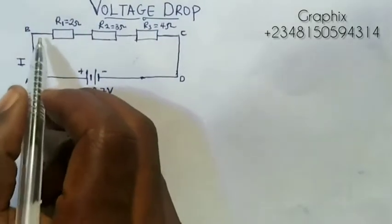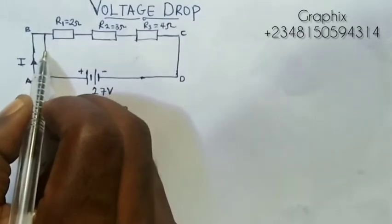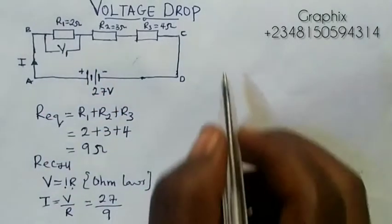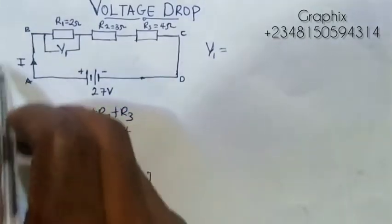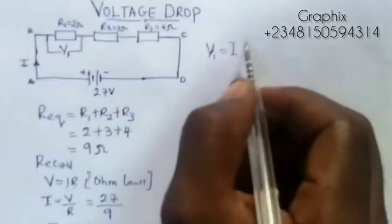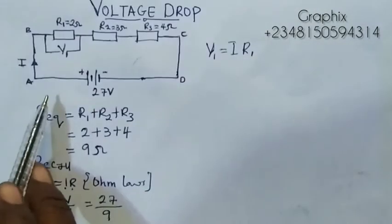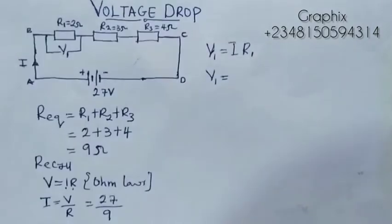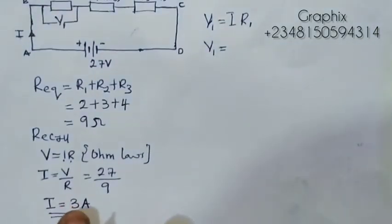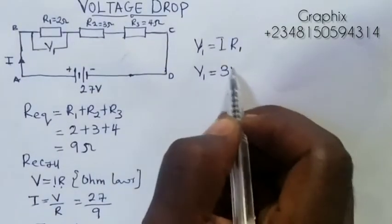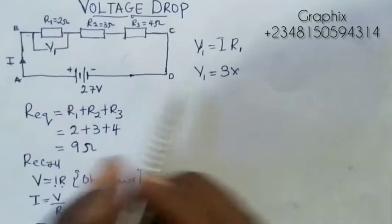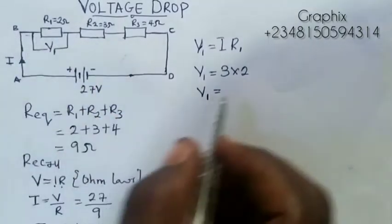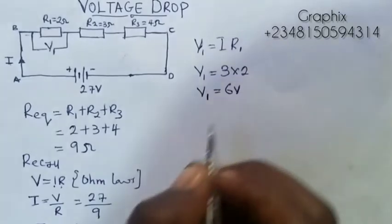So when current I flows through resistor 1, there will be a voltage drop across R1. We say that V1 equals the I flowing through times R1. From here, I can easily say that my V1 will be I, which is 3 amperes, times R1, which is 2. So our V1, the voltage drop across R1, is 6 volts.